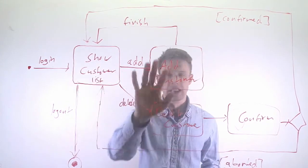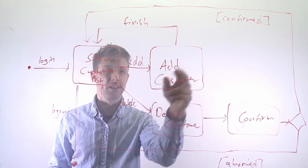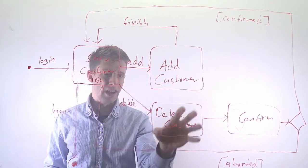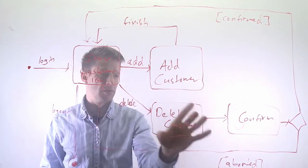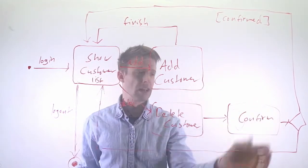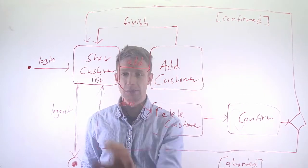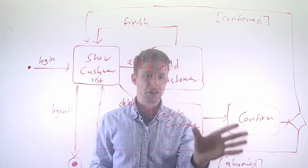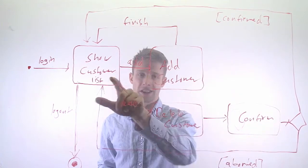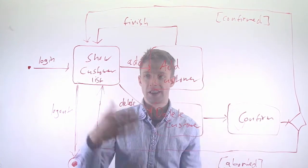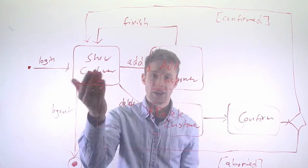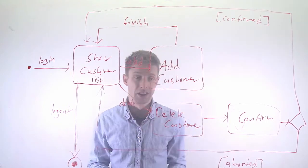Then we have two options at the moment. We can add a customer through the add operation, and then we go back to the page. And we can delete a customer, which requires an additional confirm step. If it's confirmed we go back to the customer list, if it's aborted we also go back. Of course you would expect that if we confirm the deletion, then there is a customer less. If we abort it, it's the same. If we add a customer, it should actually add a customer in the list.